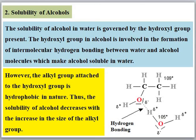The next physical property is solubility. Alcohols are usually polar and they are soluble in water. The hydroxyl group of an alcohol forms intermolecular hydrogen bonds with water, making alcohol easily soluble in water. However, the alkyl group attached to the hydroxyl group is hydrophobic in nature. The solubility of alcohol decreases with an increase in the size of the alkyl group. Ethanol is soluble in water, but as we move towards higher alcohols, solubility decreases due to the hydrophobic nature of the alkyl group.